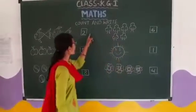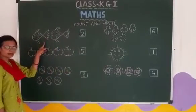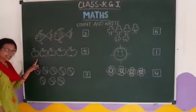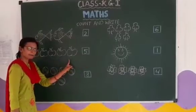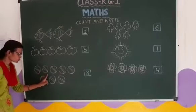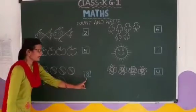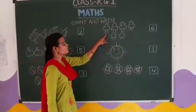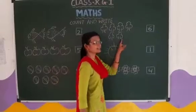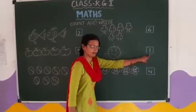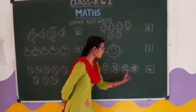So kids, count and write. Let's repeat. 1, 2 — 2 fishes. Count and write: 1, 2, 3, 4, 5 — 5 apples. Count and write: 1, 2, 3, 4, 5, 6, 7, 8 — 8 balls. Count and write: 1, 2, 3, 4, 5, 6 — 6 trees. 1 sun. Count and write: 1, 2, 3, 4 — 4 flowers.